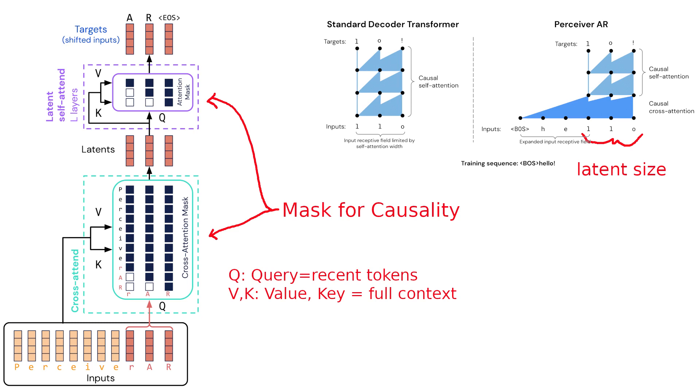That means that value and key are the full context, but query is only the most recent part and query is the length of the latent size of the Perceiver. The attention layer also uses masking for causality. Causality simply means that future values cannot be used to predict past values. So in a song, future notes cannot be used to predict the current or past notes.